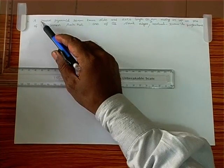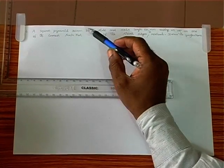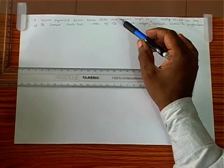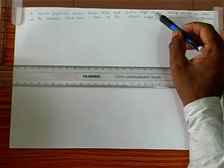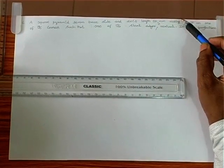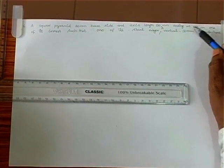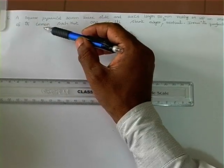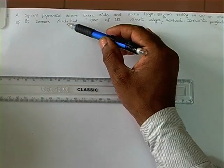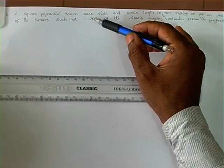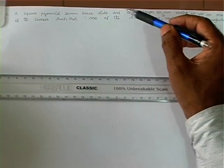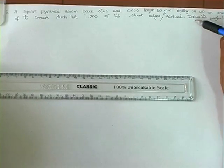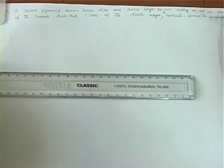A square pyramid with 30mm base side and axis length 50mm is resting on HP on one of its corners such that one of its slant edges is vertical. Draw its projection.